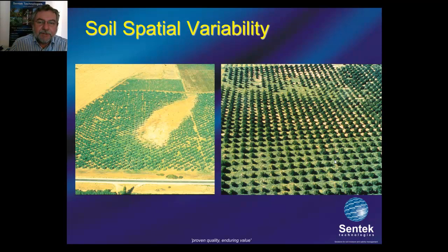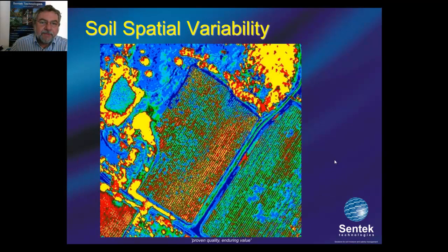Soil surveys have been used in the past to zone different areas that have more similar soil textures and crop cover. And today we're using infrared and multispectral imaging to really make site selection and zoning of irrigation management units easier.